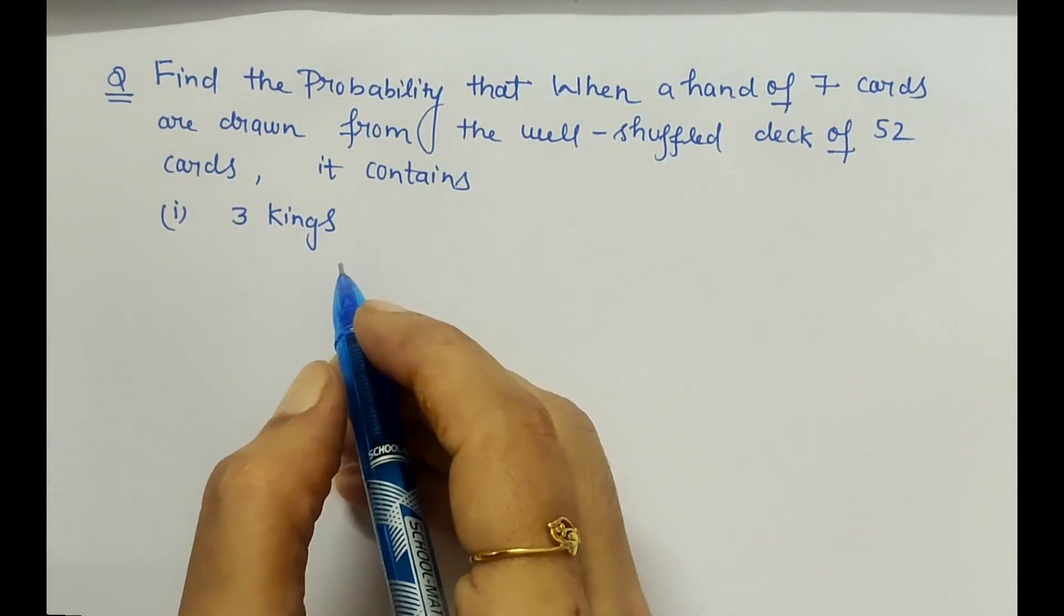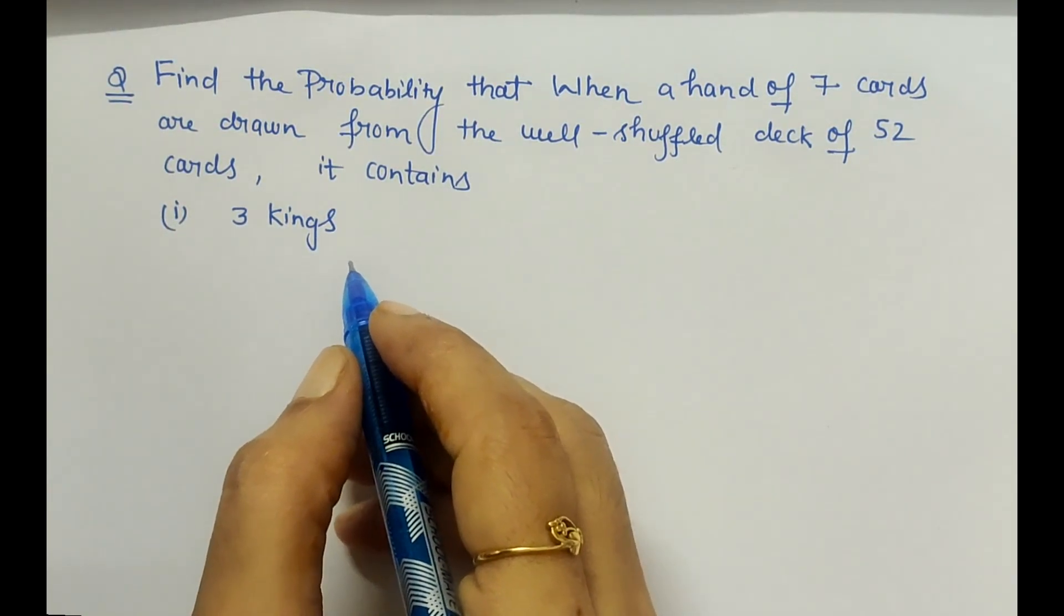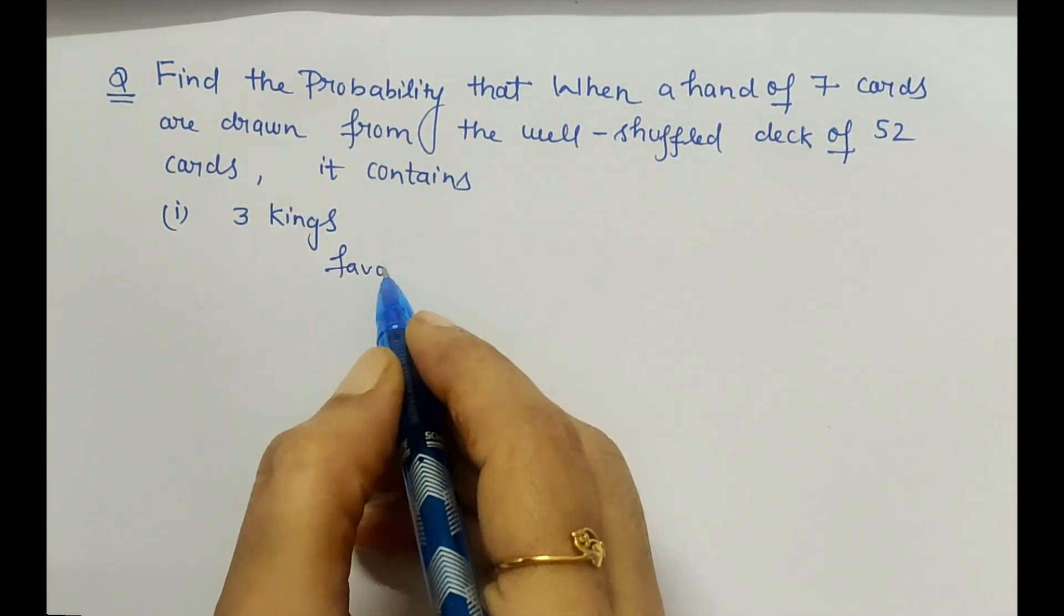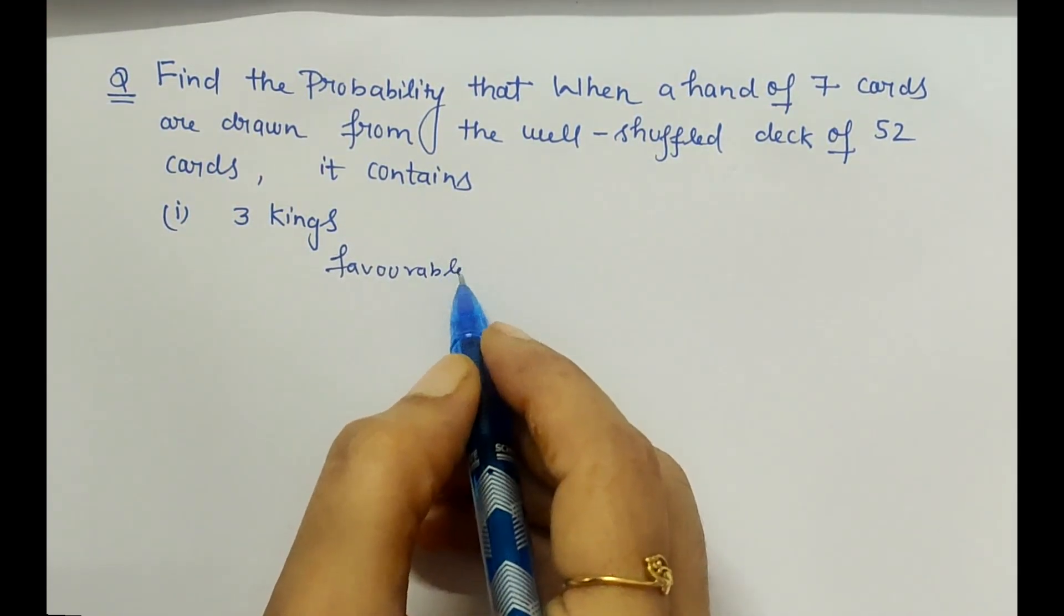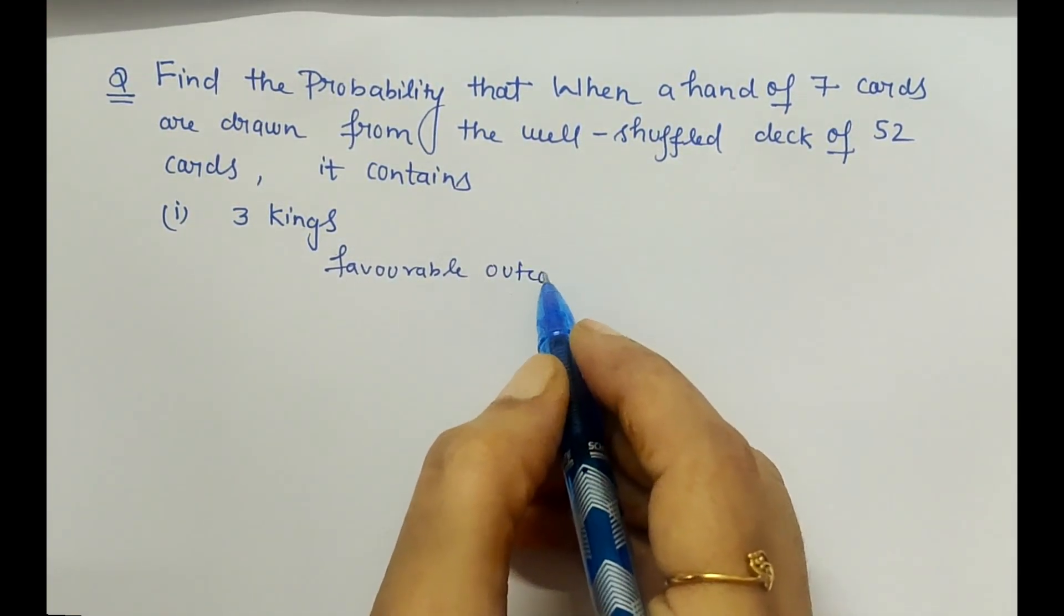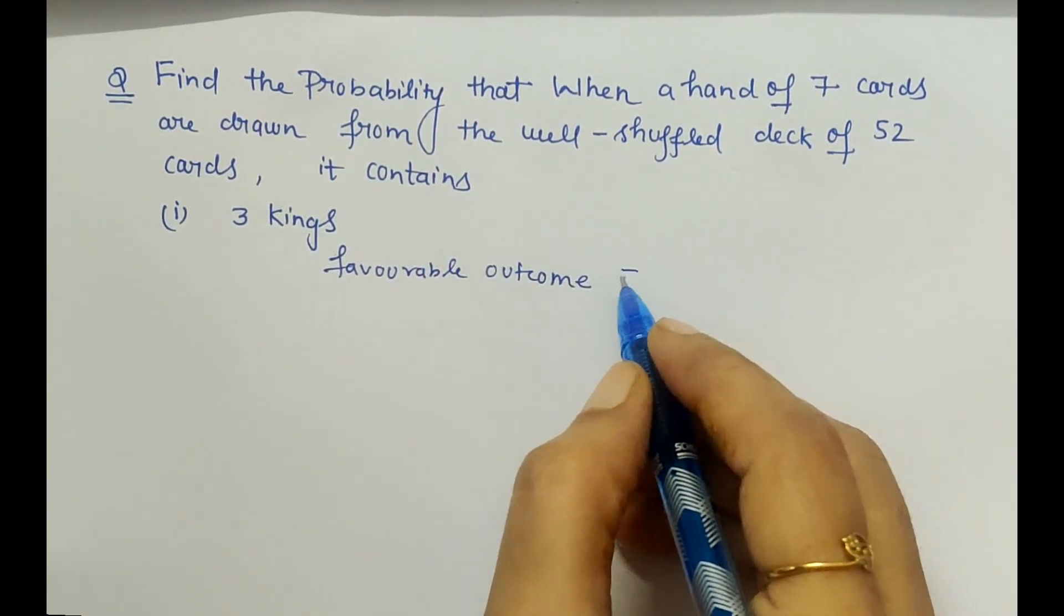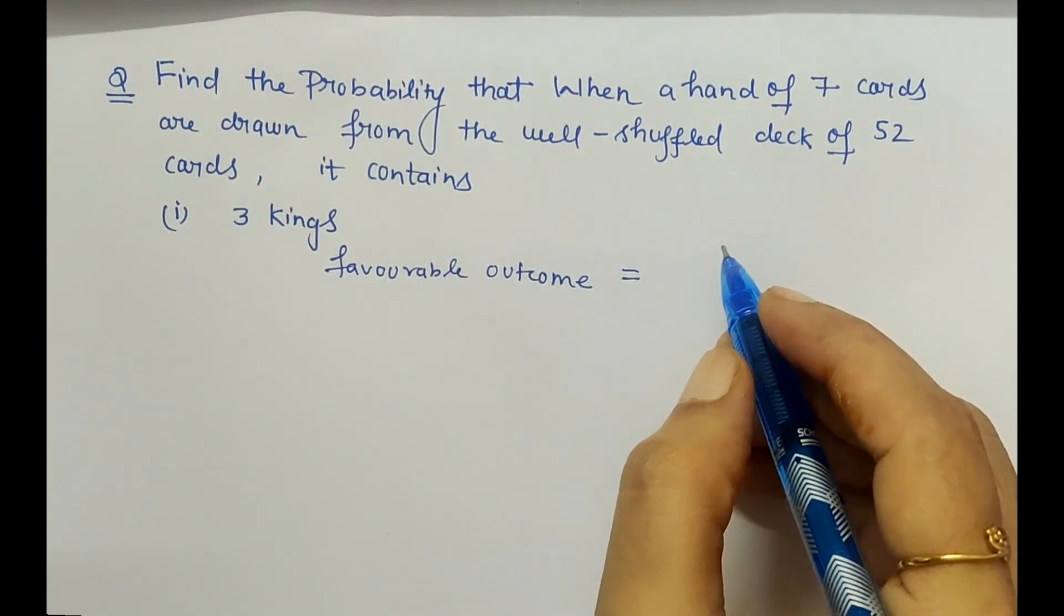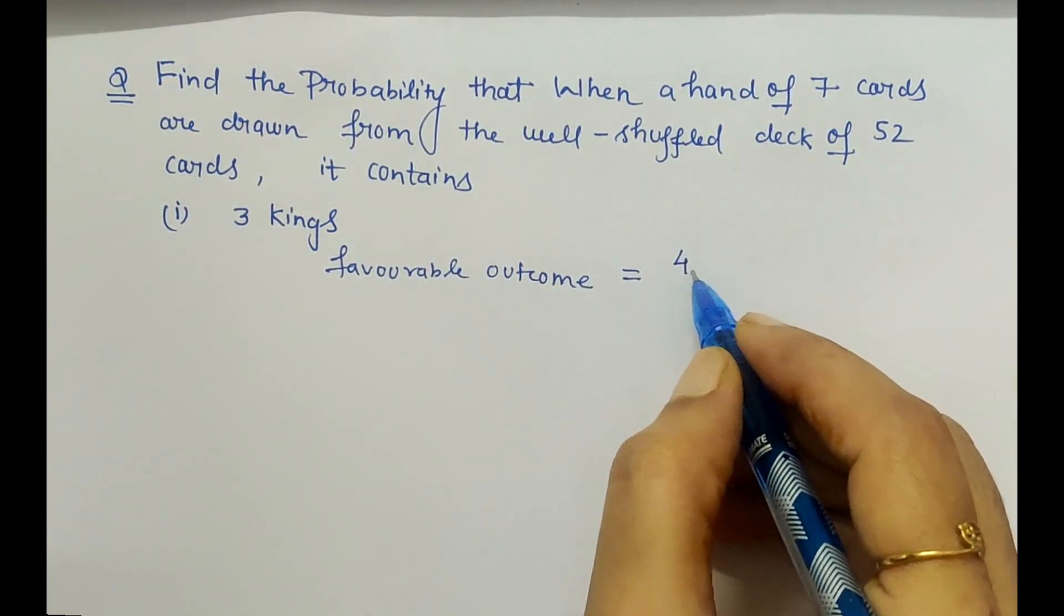First we will see what is the number of favorable outcomes. The favorable outcome here is we have to draw seven cards where three are kings. How many kings are there? There are only four kings.